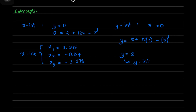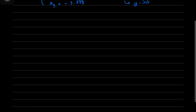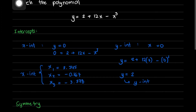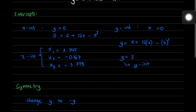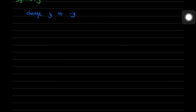The next step is to test for symmetry — with respect to the x-axis, y-axis, or the origin. To test for x-axis symmetry, we change y to negative y. So the given function y equals 2 plus 12x minus x cubed becomes negative y equals 2 plus 12x minus x cubed.